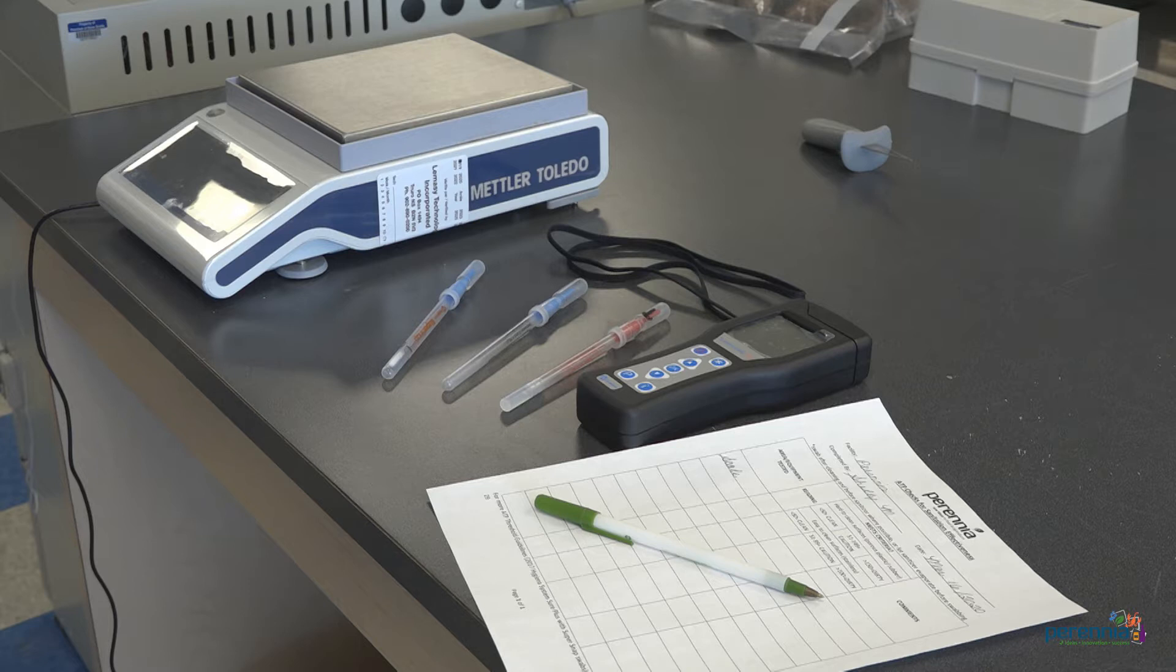ATP swabs should be completed after cleaning just prior to sanitizing. ATP is the energy molecule that is found in all living cells. The higher the RLU reading, the more ATP, meaning the dirtier the surface.